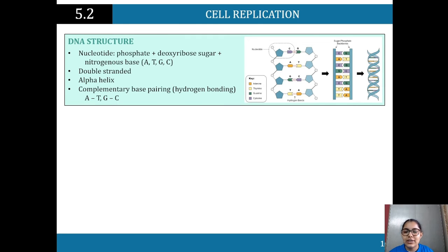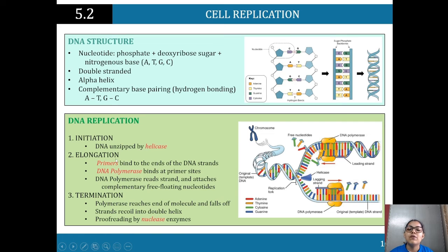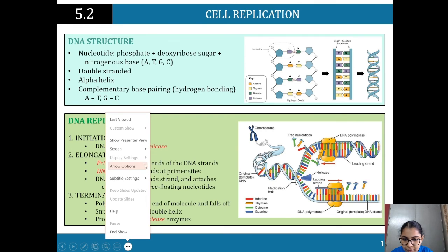Our genetic information lies in those chromosomes. For DNA replication: initiation starts when the DNA is unzipped by the enzyme helicase. Enzymes play a very important role in DNA replication and you'll come across a range of them. Helicase is one of the big ones because it unzips the DNA. Then elongation — primers bind to the end of the DNA strand at the replication fork. There's a three-prime end and a five-prime end. Replication starts from the five-prime end going straight down.